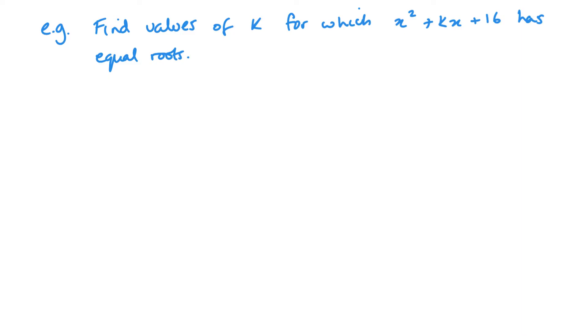So let's look at how we're using this within a problem. So we've got X squared plus KX plus 16 has equal roots, and we need to find out our value of K. So if it's got equal roots, it means that B squared minus 4AC equals 0. And I can see up here that A is 1, B is K, and C is 16.